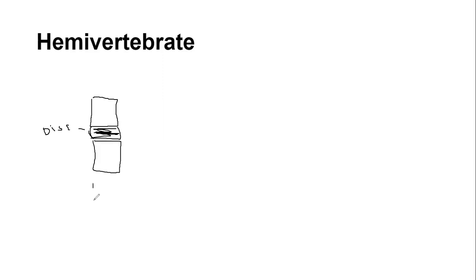These vertebrae are pretty rectangular — normally they're more square. Here's the disc right here, and there's also a disc down here too. The discs act like shock absorbers, which I mentioned in the scoliosis video.